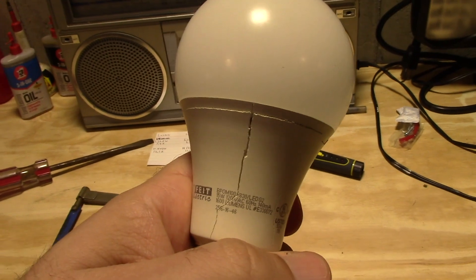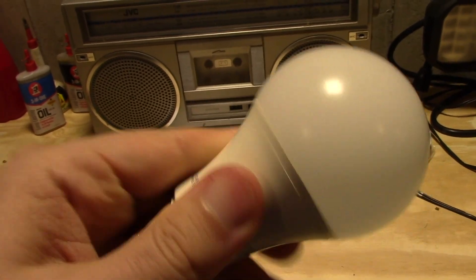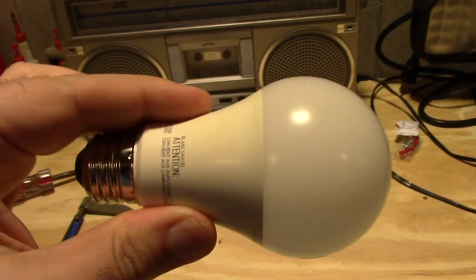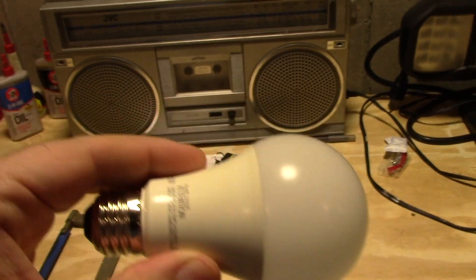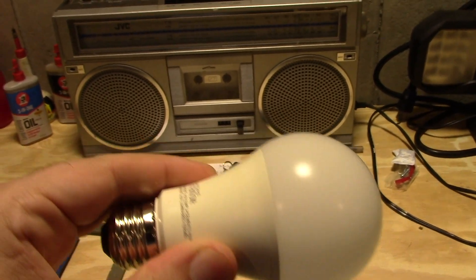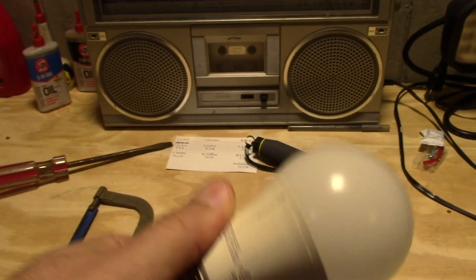But any time one of these bulbs goes out, I mean, this is the first one that's gone out. But if any of these bulbs go out, I'm just replacing them with the glass 100-watt equivalent LEDs because they actually look like a regular light bulb, which is awesome.